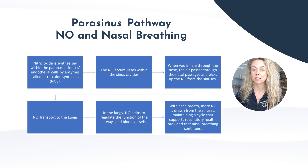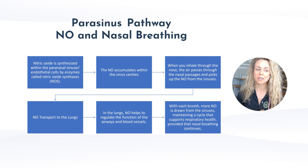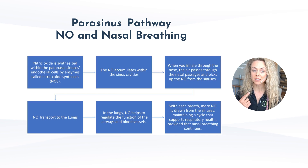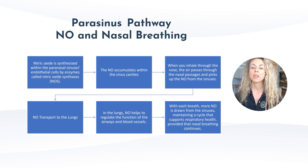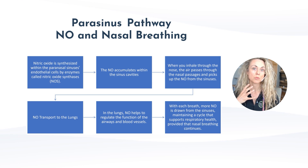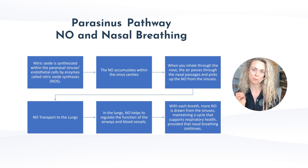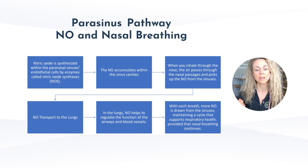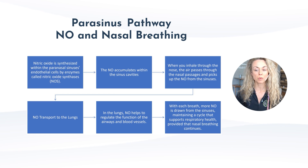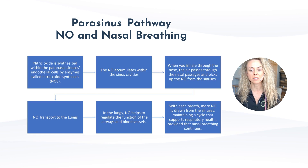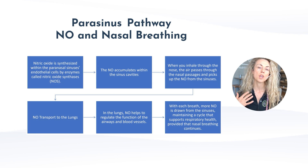Now the parasinus pathway: nitric oxide is synthesized within the paranasal sinuses in endothelial cells by nitric oxide synthases. It accumulates within the sinus cavity, and when you inhale through the nose — nasal breathing being critical here — the air passes through the nasal passages and picks up the nitric oxide from the sinuses. It's transported to the lungs, where the nitric oxide helps regulate airway and blood vessel function. With each breath, more nitric oxide is drawn from the sinuses to maintain a cycle that supports respiratory health, provided we are breathing nasally and not through the mouth.